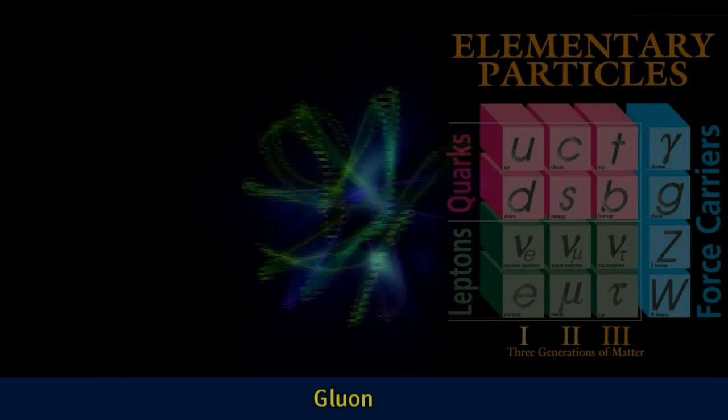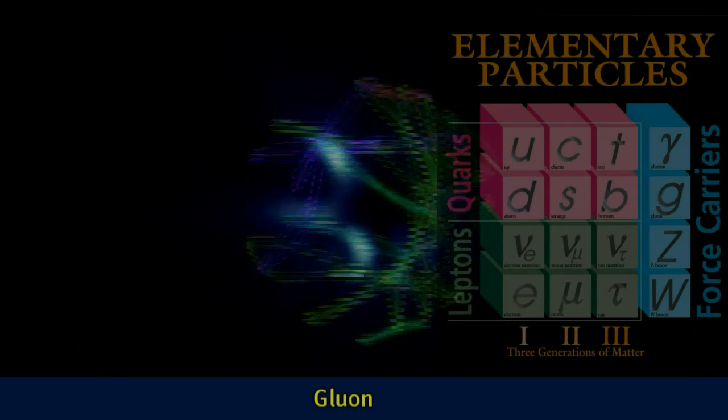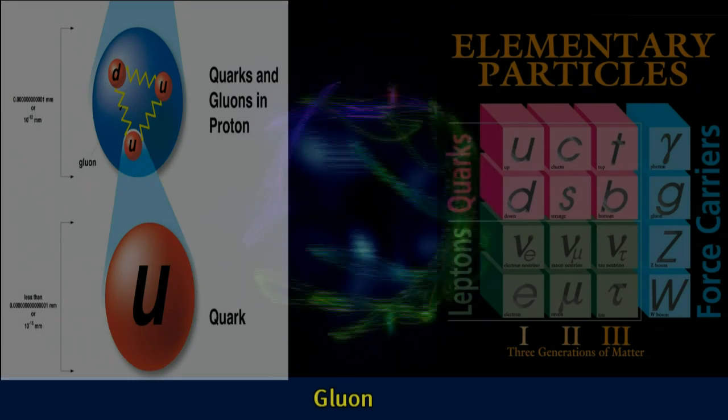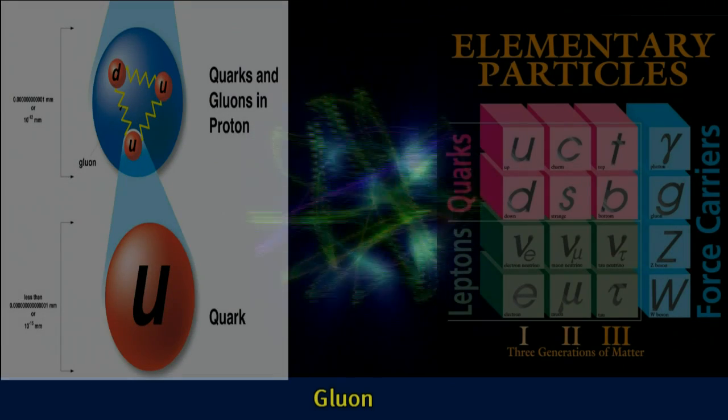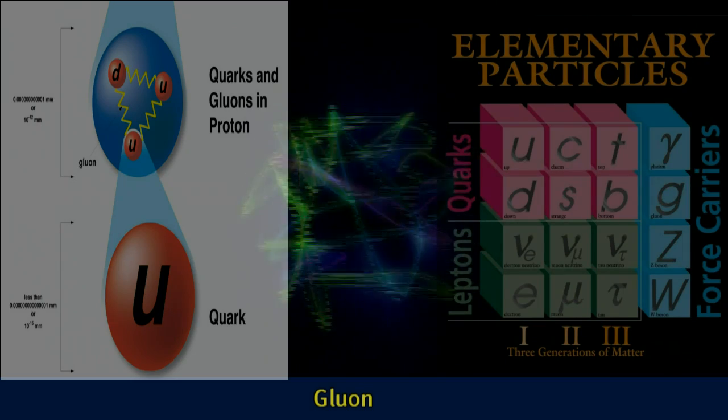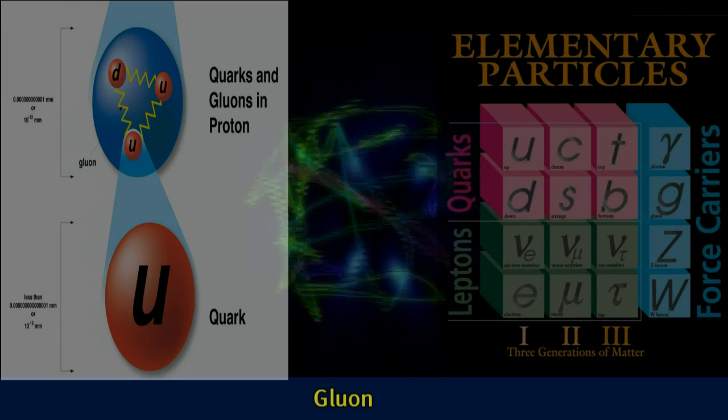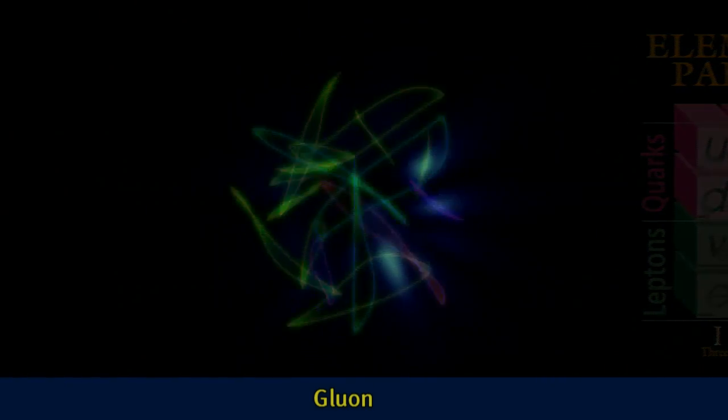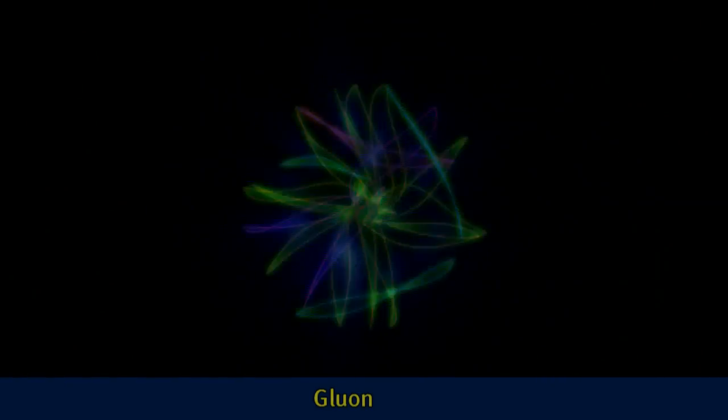Next, we know that the strong force mediated by the gluons increases in strength as the quarks get further apart. This means the gluon field is what is called a flux tube, and this leads to a gluon shape like a stream. Putting all these ideas together leads to the depiction you see on the screen.